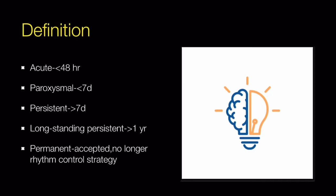Let us look at some definitions related to atrial fibrillation. Acute atrial fibrillation means duration less than 48 hours. Paroxysmal atrial fibrillation means duration less than seven days. Persistent atrial fibrillation means duration more than seven days. Long-standing persistent atrial fibrillation means duration more than one year.